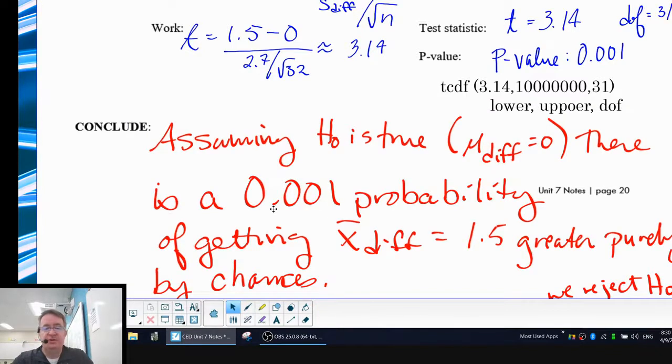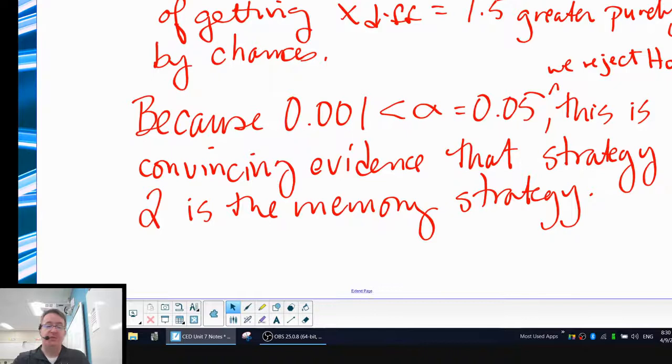For our conclusion, assuming the null hypothesis is true, that there is no difference between the mean difference of what we're studying is zero. There's a 0.001 probability of getting X bar difference of 1.5 or greater purely by chance. So that's the interpretation part. You have to explain what your test showed. And then we're going to make the conclusion. Because 0.001 is less than our alpha value of 0.05, we reject the null hypothesis because this is convincing evidence that strategy two is the better memory strategy.